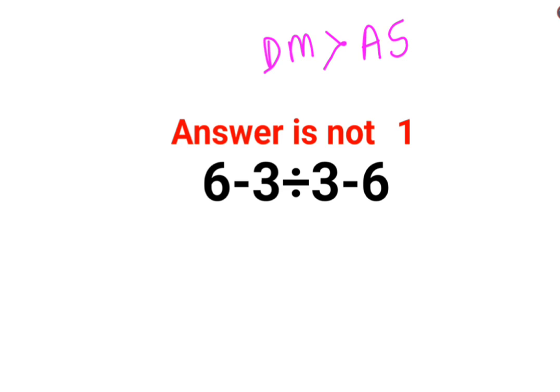First, we should do this operation. We keep 6 as it is. Minus 3 divided by 3 gets you minus 1. Minus 6 comes as it is.